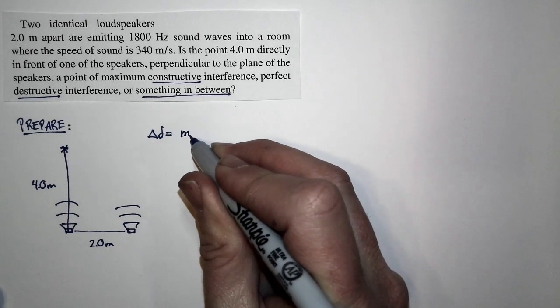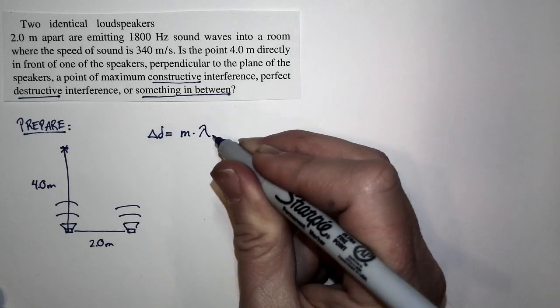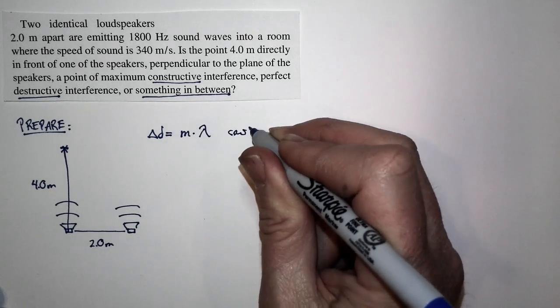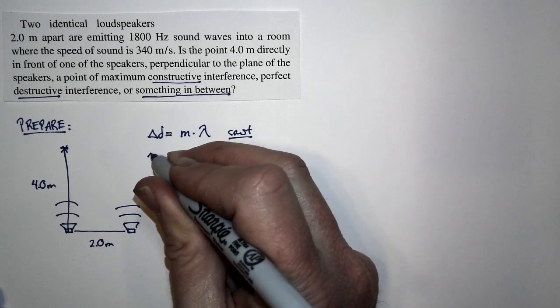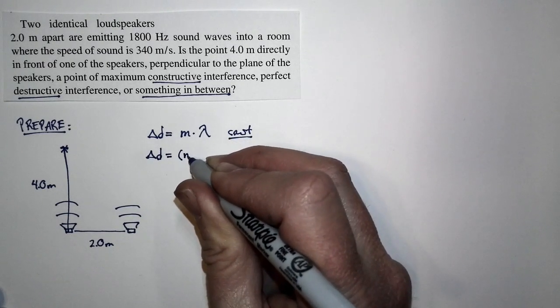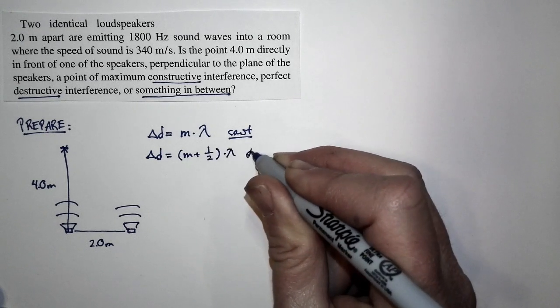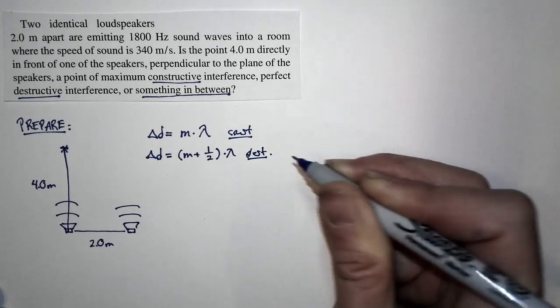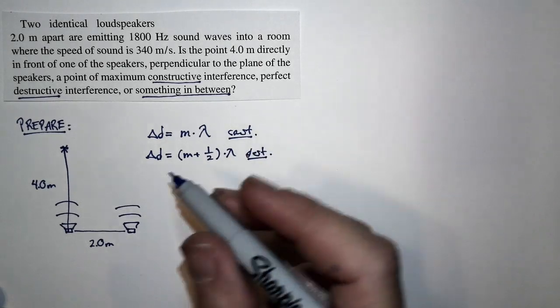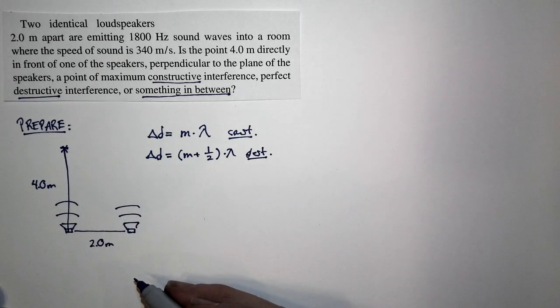Our conditions for constructive and destructive interference depend upon the difference in distance from the two sources of sound. If the difference in distance equals m times the wavelength, that's constructive. If the difference in the distance from the two sound sources equals an integer plus a half times the wavelength, that's destructive interference. We want to know which case this situation corresponds to.